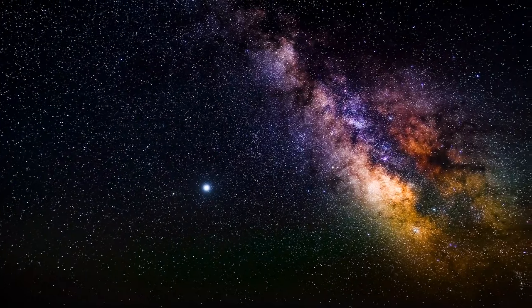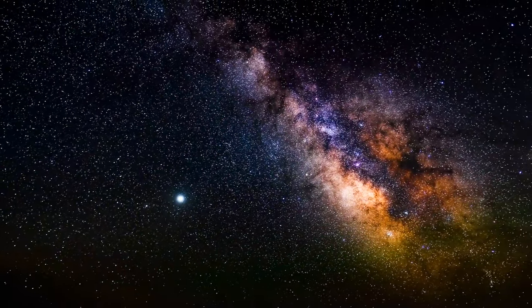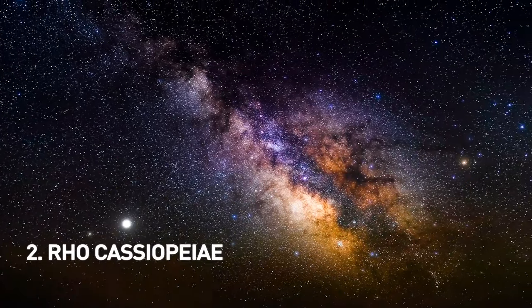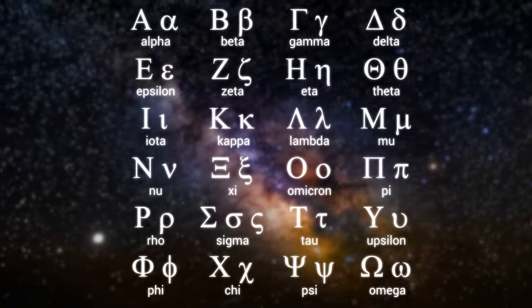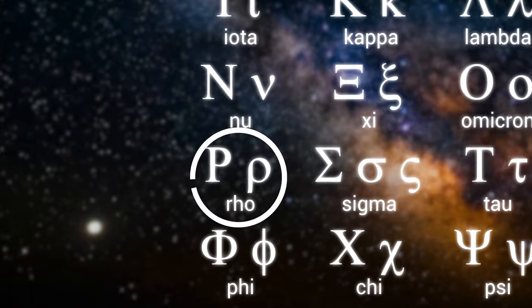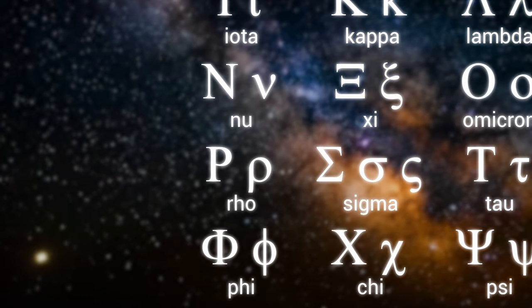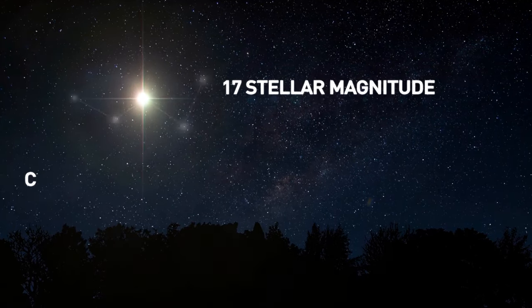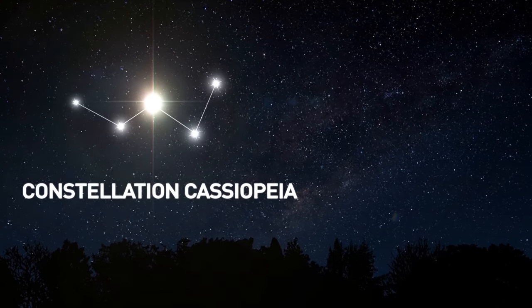Now, from a list of over 30 likely candidate stars that might go supernova, Rho Cassiopeiae is many astronomers' choice. Another Greek letter, Rho, is the 17th letter in the Greek alphabet. It means that Rho Cassiopeiae is the star with the 17th brightest apparent magnitude in the constellation Cassiopeia.